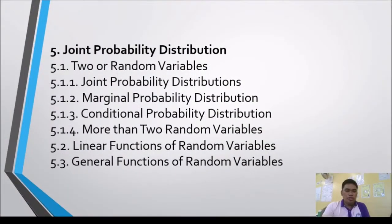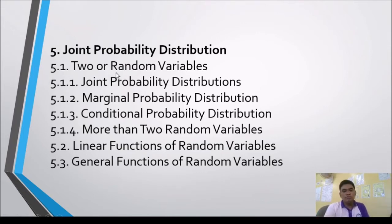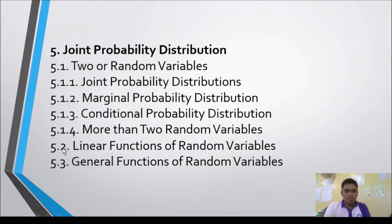The fifth topic is Joint Probability Distributions, with three lessons. The first lesson covers two random variables with sub-topics: joint probability distribution, marginal probability distribution, and conditional probability distribution. The second lesson covers more than two random variables. The third lesson covers linear functions of random variables and general functions of random variables.